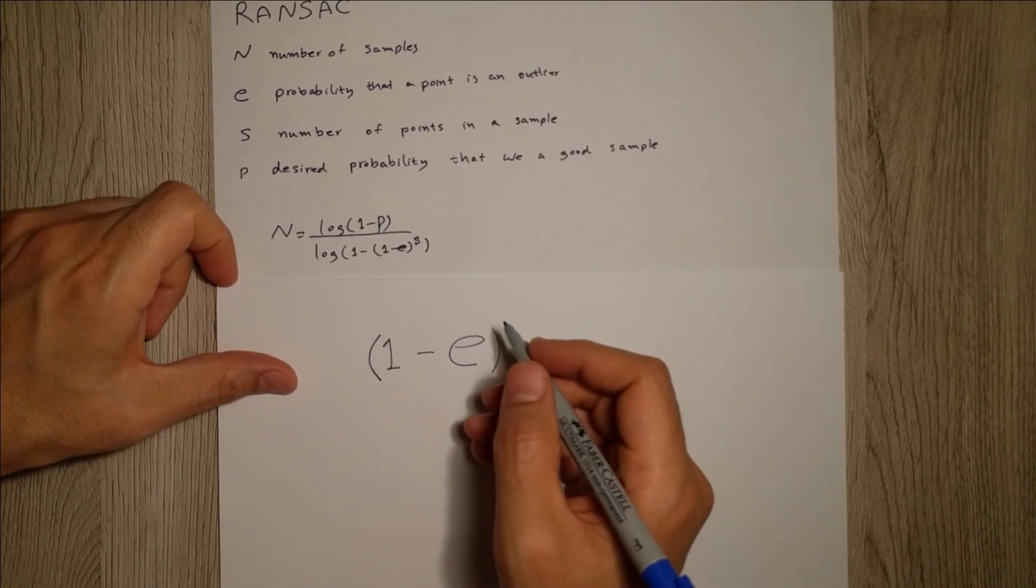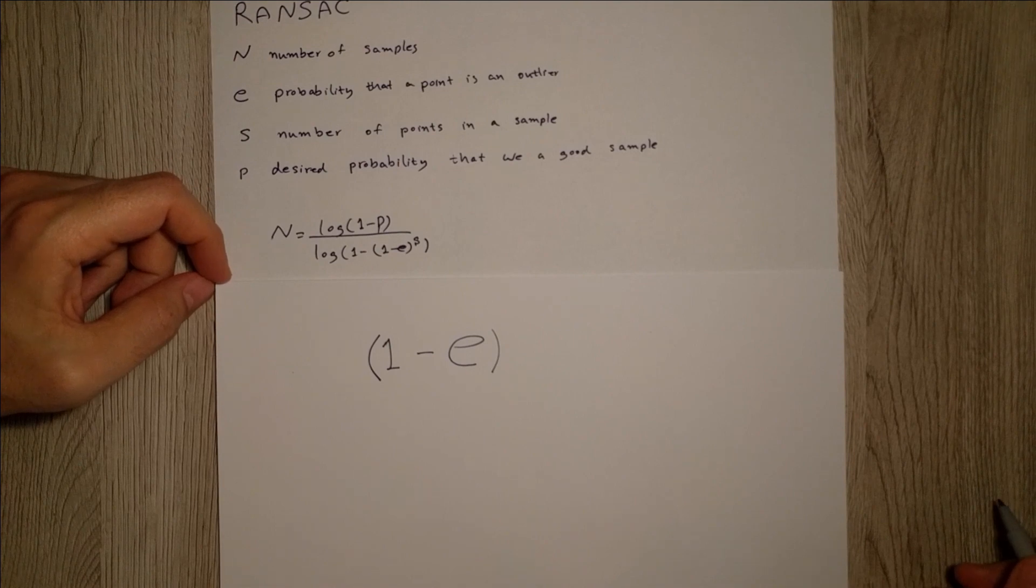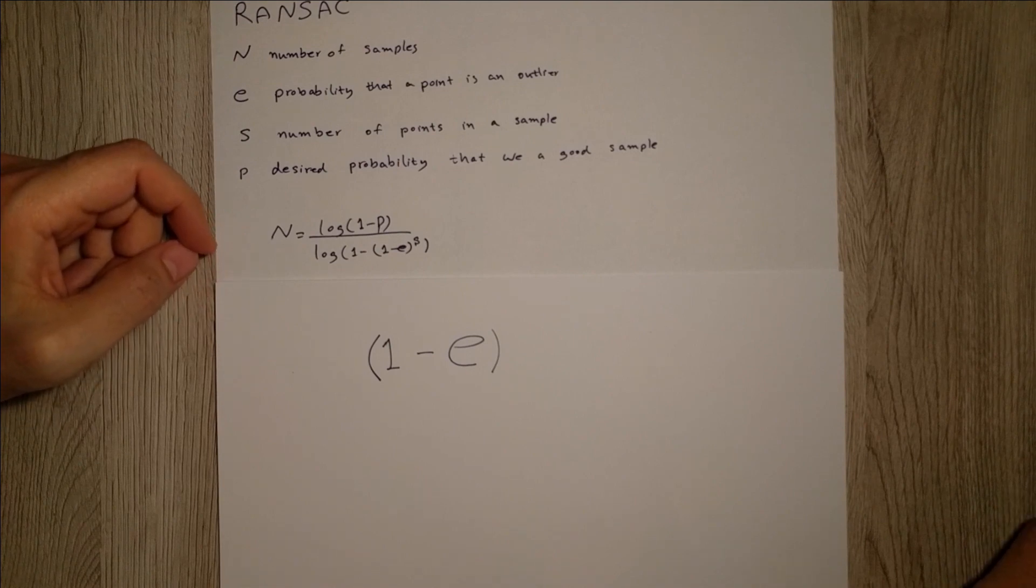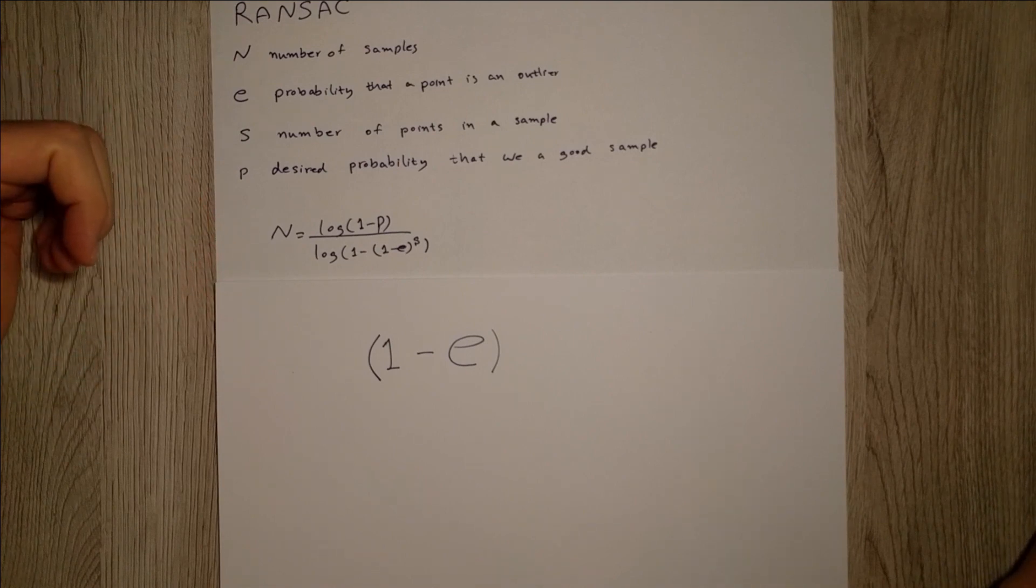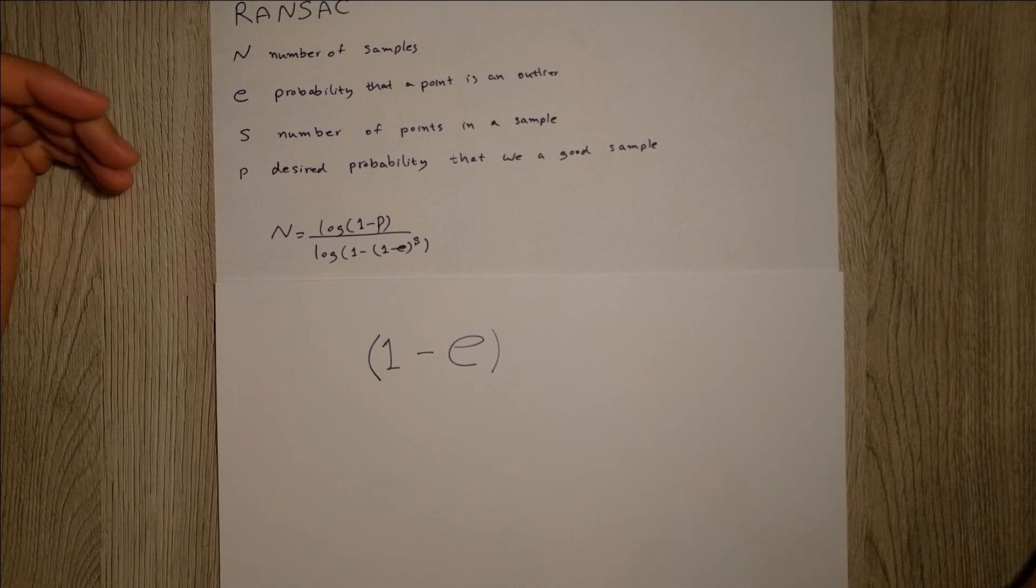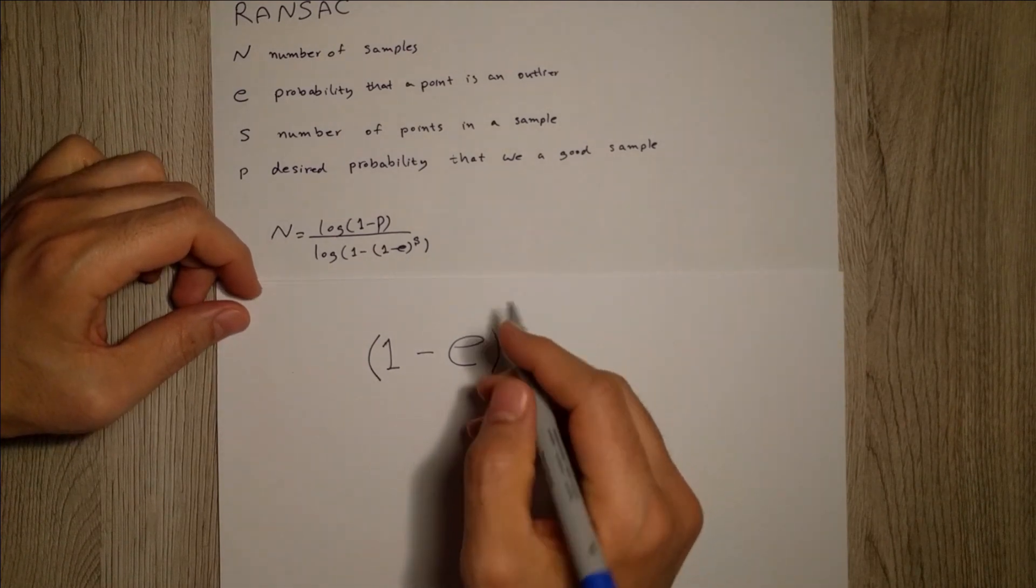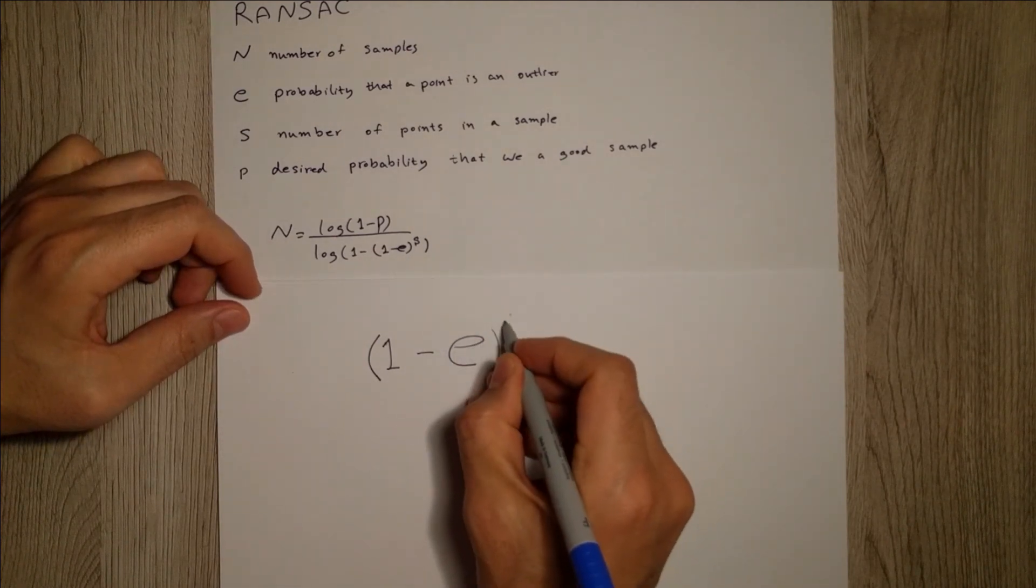And we know that our data points are independent of each other, so the joint probability is going to be the multiplication of them. So I have to repeat it S times, so it's going to be power S. So this is the probability that we choose S points and they are not outliers, all of them are inliers.